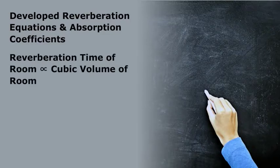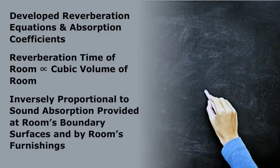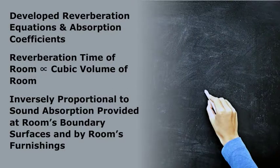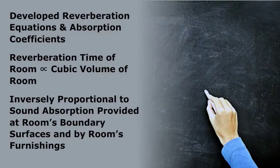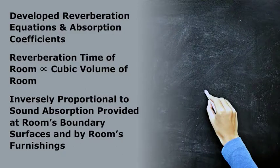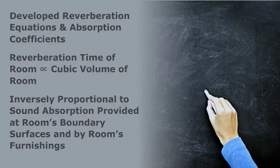He discovered that the reverberation time of a room is directly proportional to the cubic volume of the room and inversely proportional to the sound absorption provided at the room's boundary surfaces and by the room's furnishings. His equation uses the simple dimensions of the room and absorption coefficients of materials to determine the acoustic effect of the space, offering a simple method for architects to determine favorable room proportions and treatments. Thanks to Sabine's recommendations, the Fogg Lecture Hall was reopened in 1898.